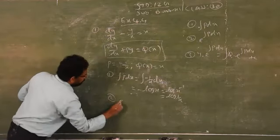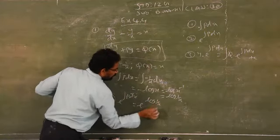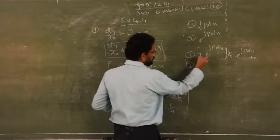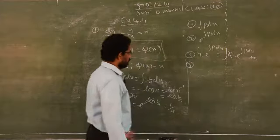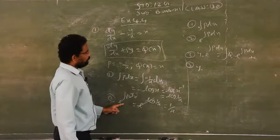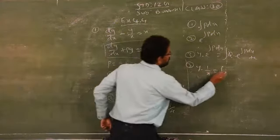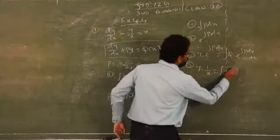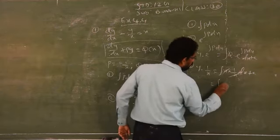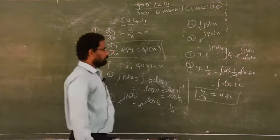What is the last third step? I straight away take the third step formula: y·(1/x) = ∫Q(x)·(1/x) dx plus c. Q is x, so x times 1/x = 1. Integration of dx = x. So: y/x = x plus c. This is your required answer. Compare with the previous exercise — this exercise feels very simple. You only need to memorize this formula.